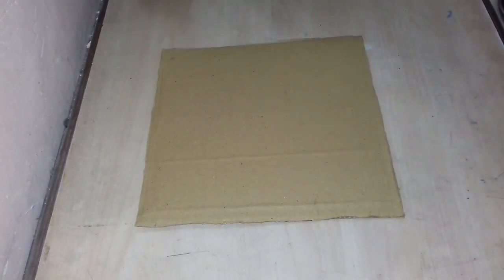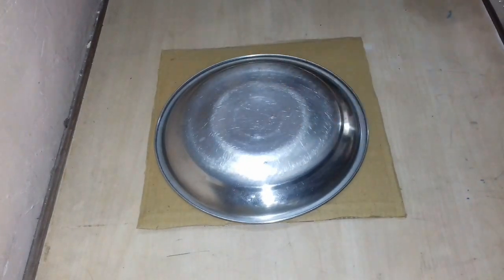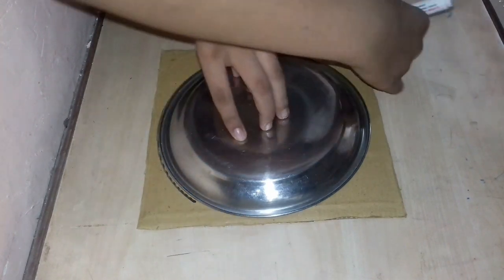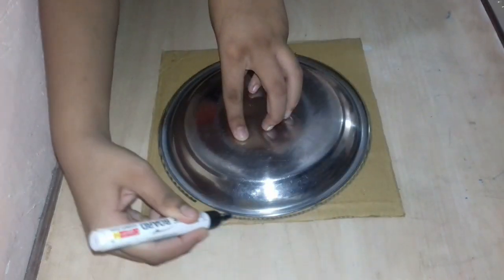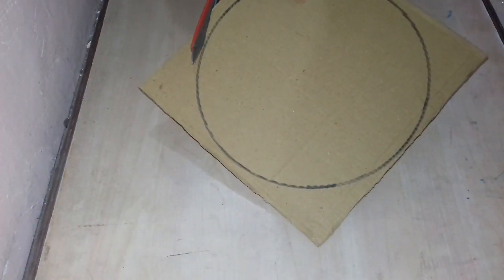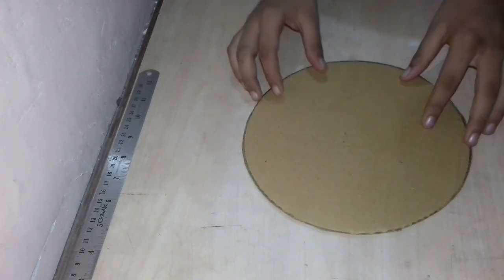Now we will take another cardboard and will cut a circle out of it. This is how we will draw a circle and will cut it with scissors. Now I have cut it.